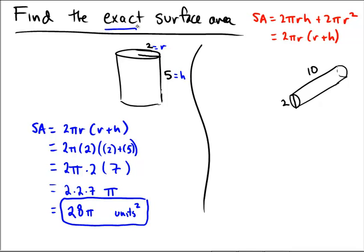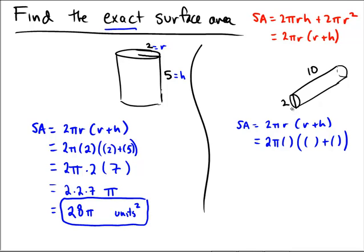For the second problem, the surface area formula is still 2πr(r + h). However, the radius is a bit sneakier here because we're given a diameter. Notice how that line goes through the whole center. Since the diameter is 2, the radius is half of that, so the radius is 1.